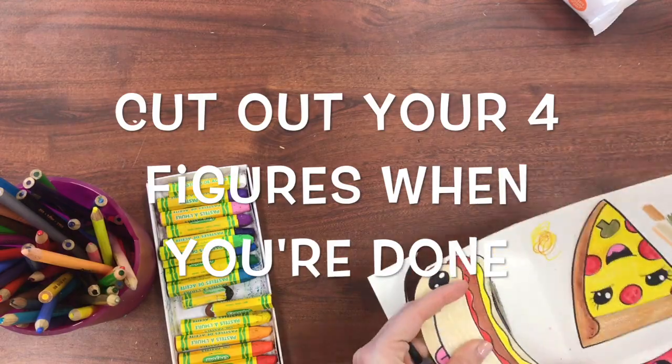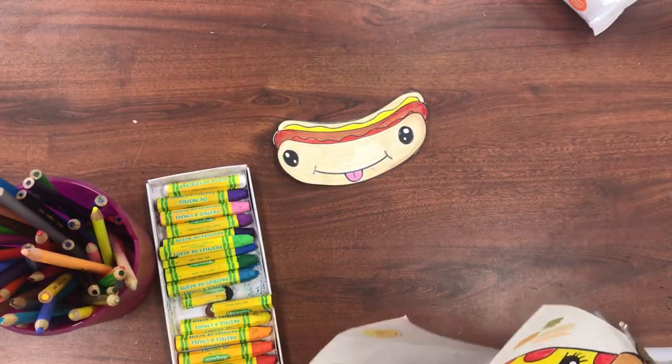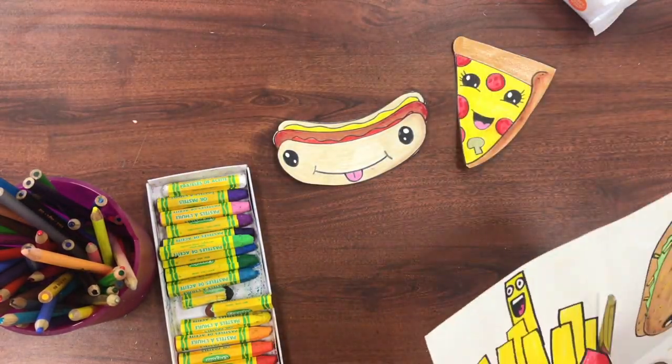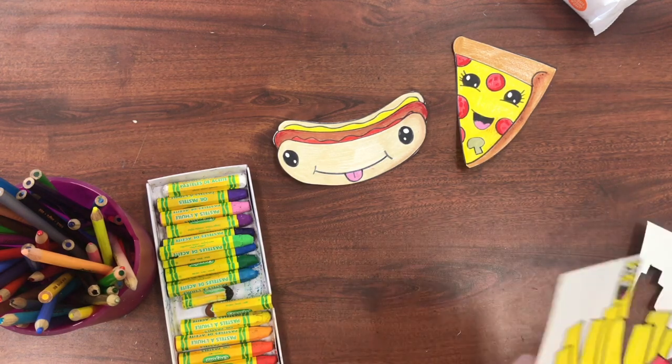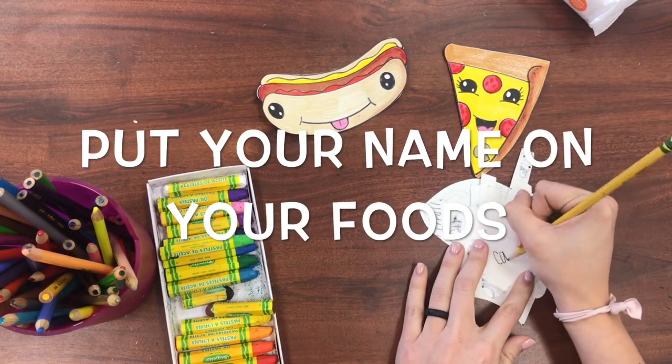When you are finished with all four of the characters you have chosen, cut them out one by one and then you're going to be writing your name on the back of each one.